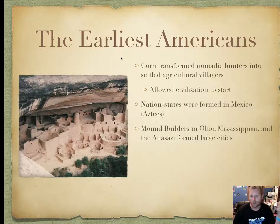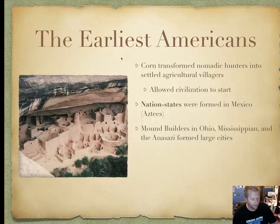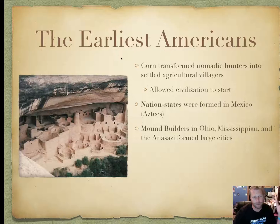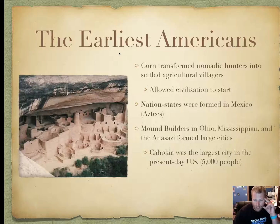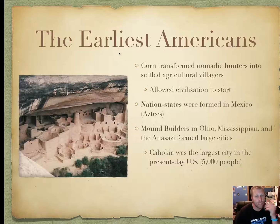Mesa Verde, or 'Green Table,' is in southwestern Colorado and is a national park. It was abandoned suddenly, and there's a bit of mystery about the Anasazi — most likely they starved out because of climate change. There's another one called Cahokia in modern-day Illinois, which was the largest city in the present-day United States at the time, with nearly 5,000 people — still bigger than Silt.